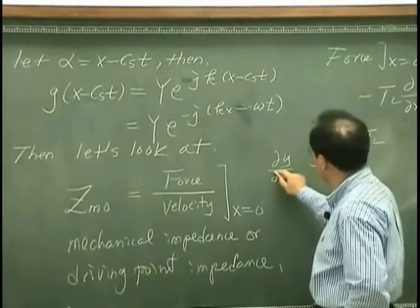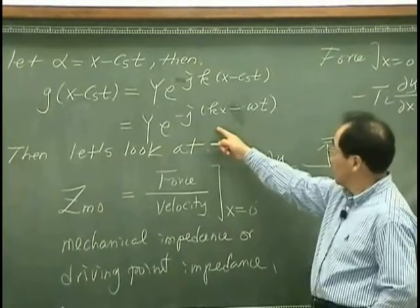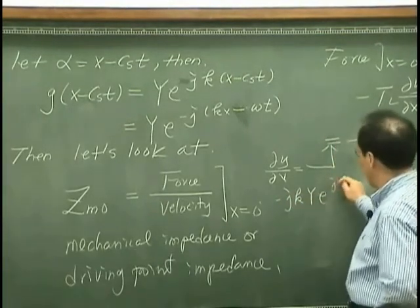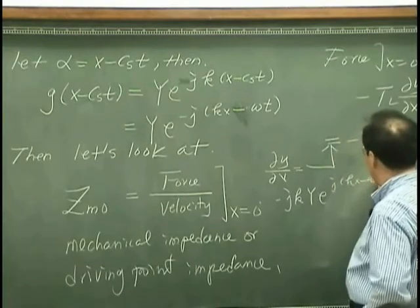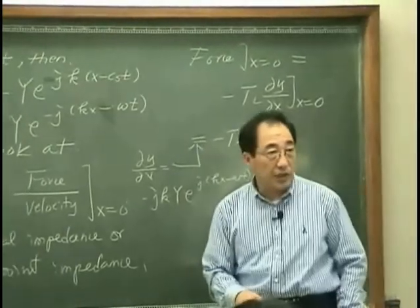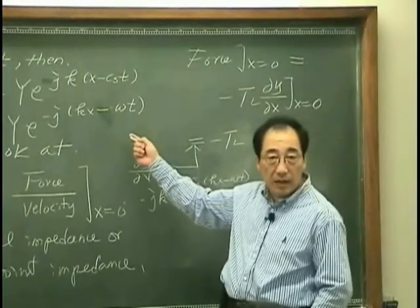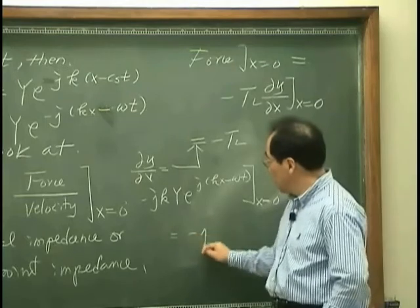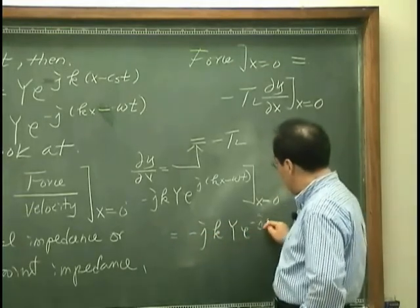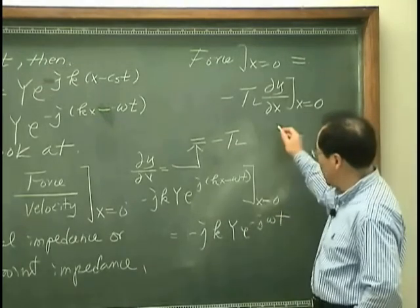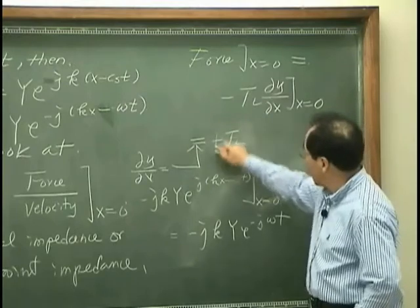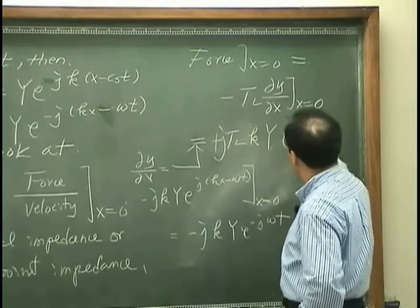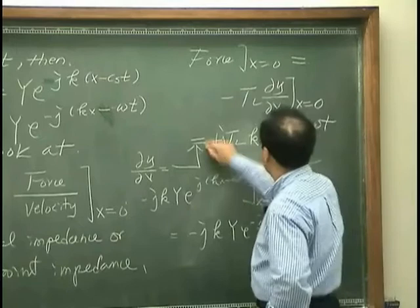dy/dx is simply minus j·k·Y·exp(j(kx − ωt)). I am differentiating the displacement y with respect to x and evaluating at x equals zero, which gives minus j·k·Y·exp(−jωt). So I write here: minus j·k, which makes this plus, times j·k·Y·exp(−jωt). That is what I obtain.